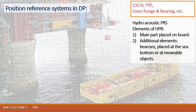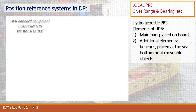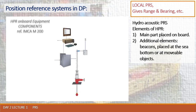For reference we use IMCA guidance M200 where Deepwater Hydro Acoustics is described. According to that guidance, the onboard part consists of the following elements. We always have an operator station, which is the source of data output for our DP equipment. The operator station is computer-based equipment with specific software installed and running during the use of HPR equipment.